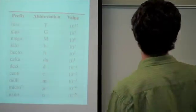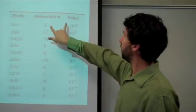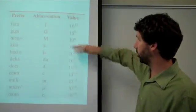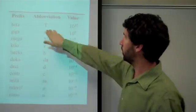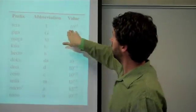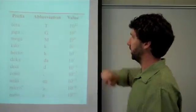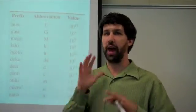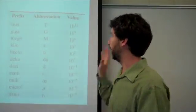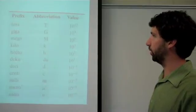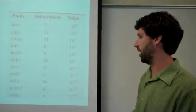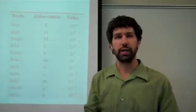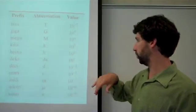The first thing to know about scientific prefixes is that these two things — the prefix and its power of 10 — you can think of as interchangeable. Here is a chart of different scientific prefixes. We have terra, which is 10 to the 12th; giga, 10 to the 9th; and so on. You could find a list like this in many places on the web. I've gone from terra down to nano, though these are certainly not all the prefixes — there are many more on either side.